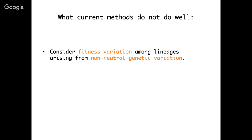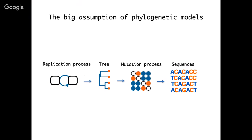This has frustrated a lot of people over the years, including me. It's a problem I've thought about for many years. Today I'd like to talk about one approach that I came up with, working with Tanya Stadler at ETH Zurich, on how we can incorporate adaptive molecular evolution into these models. But first, I think it's worth asking why it's been so difficult to incorporate adaptive or non-neutral evolution into phylogenetic methods.